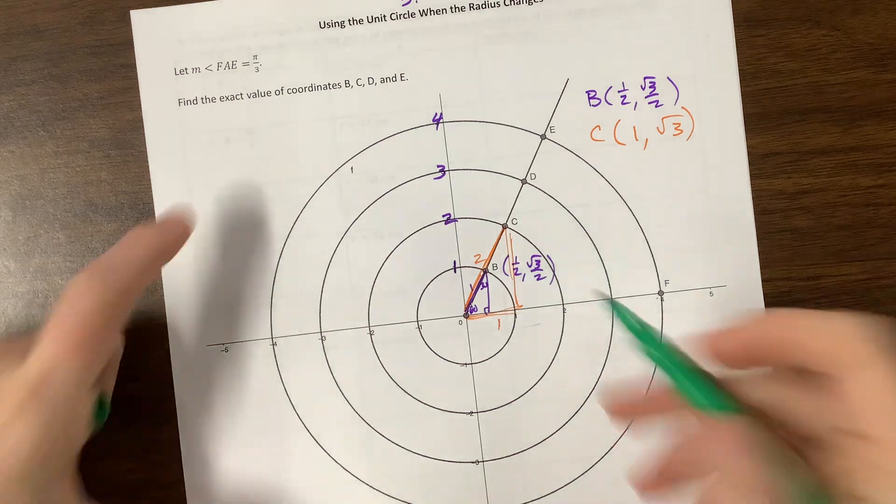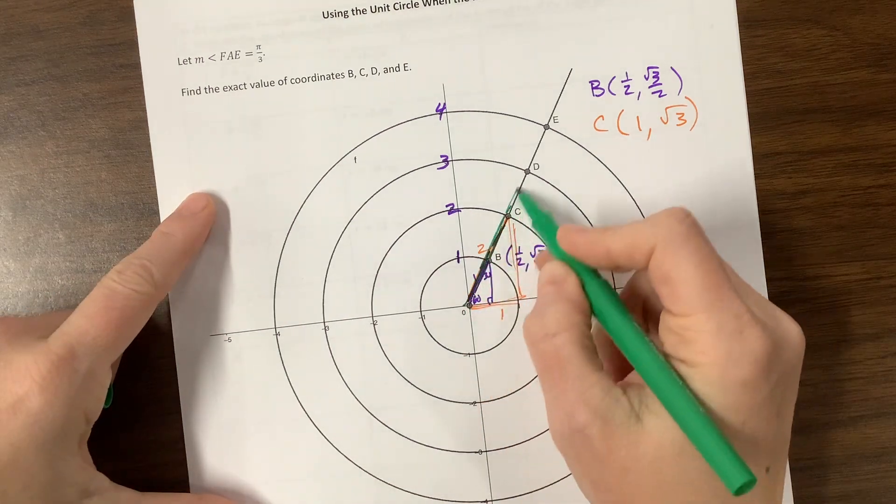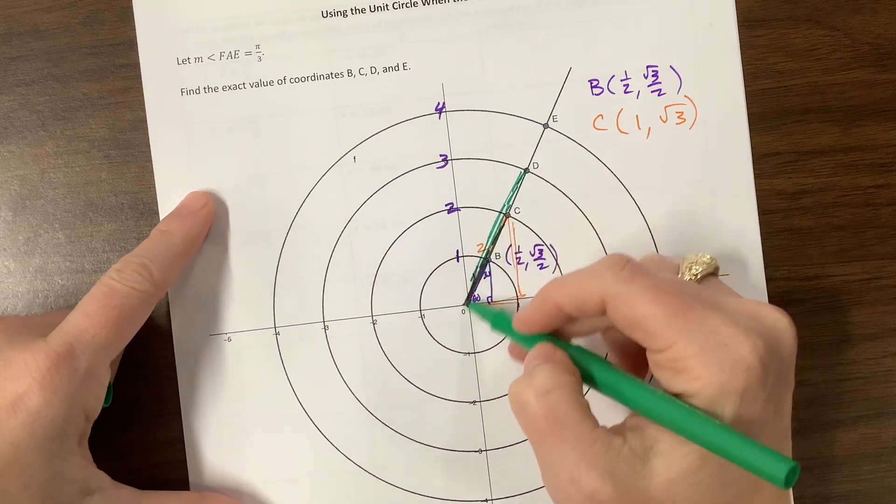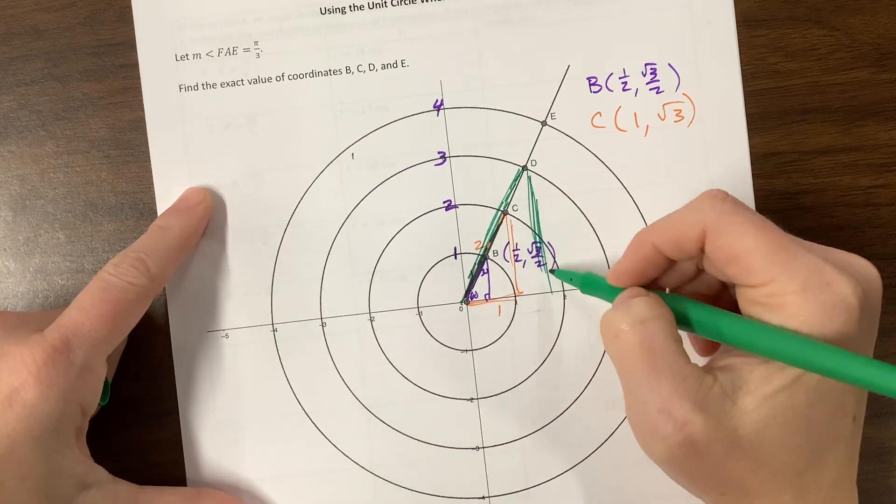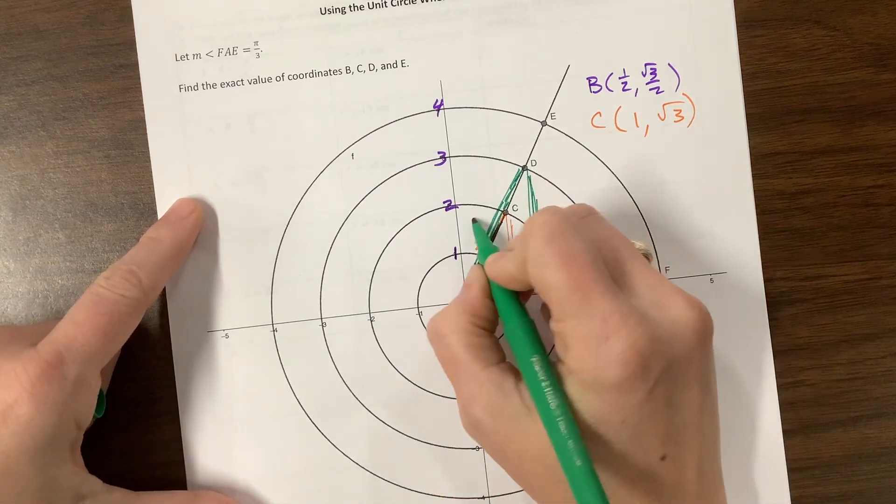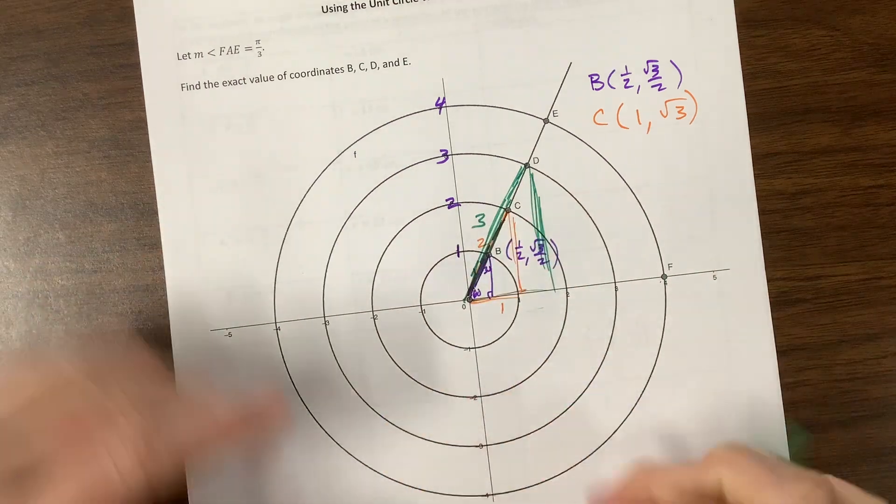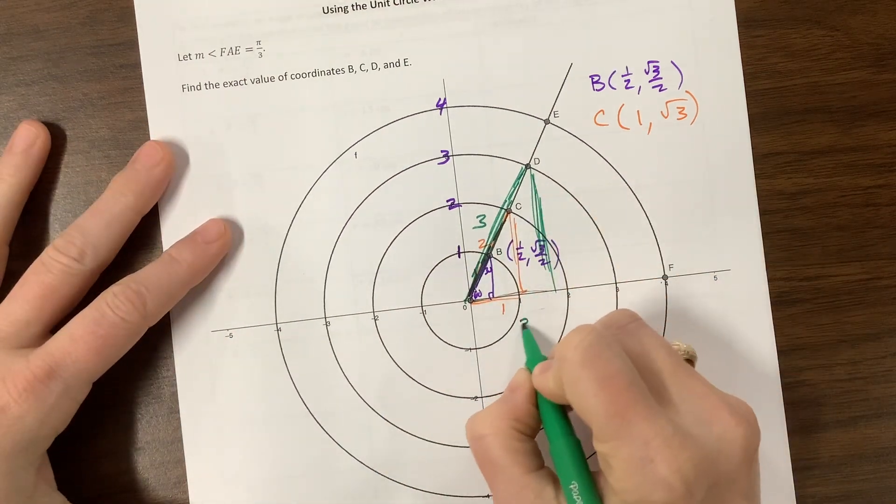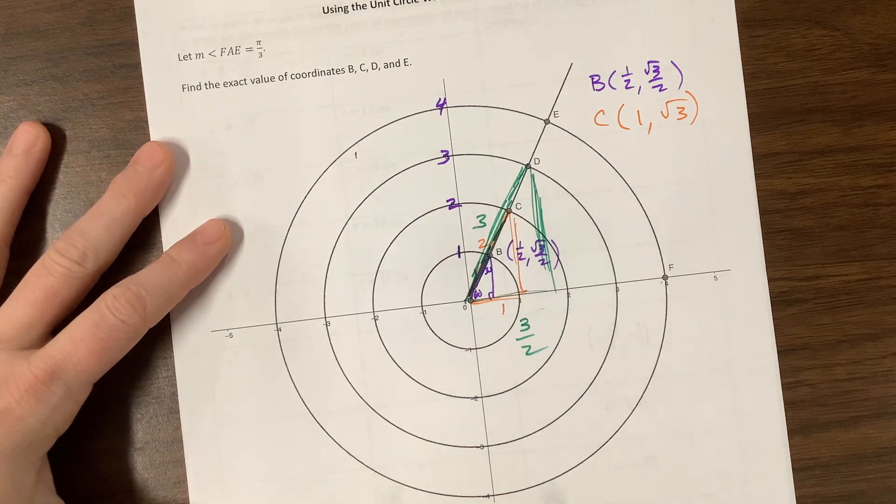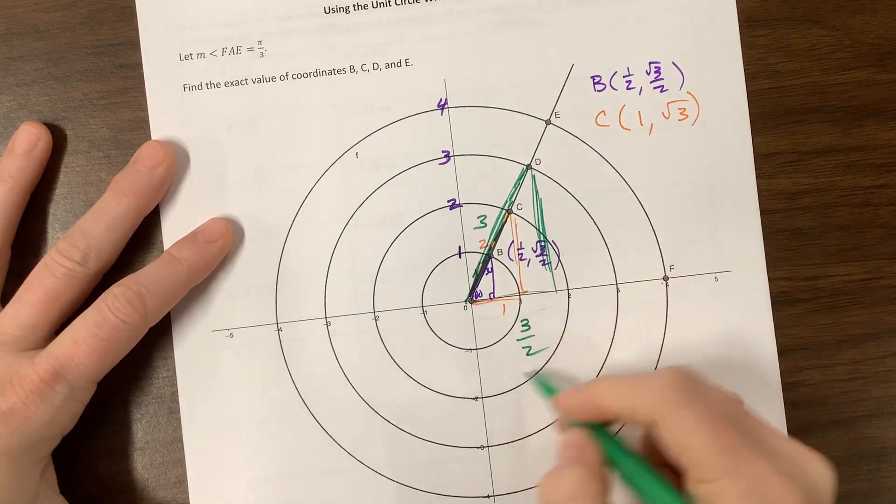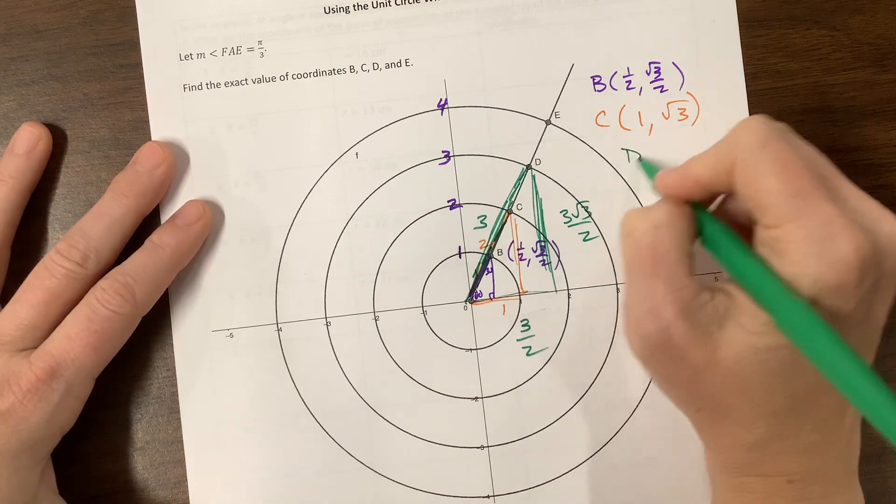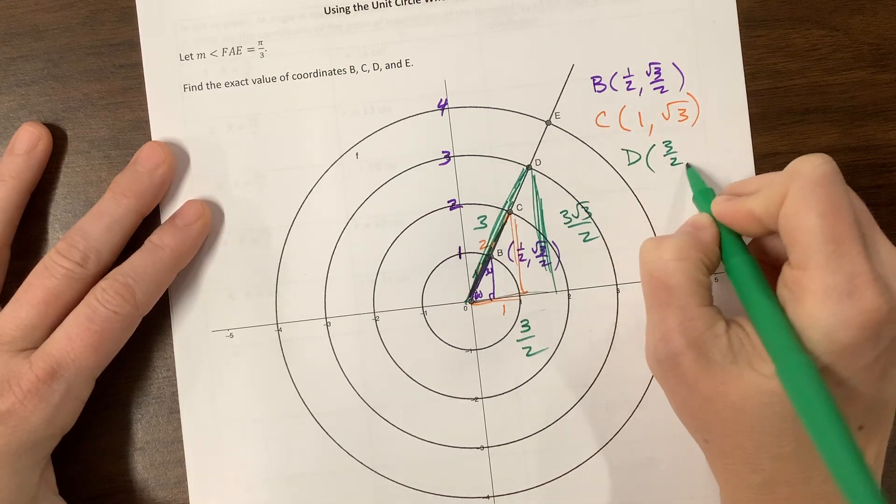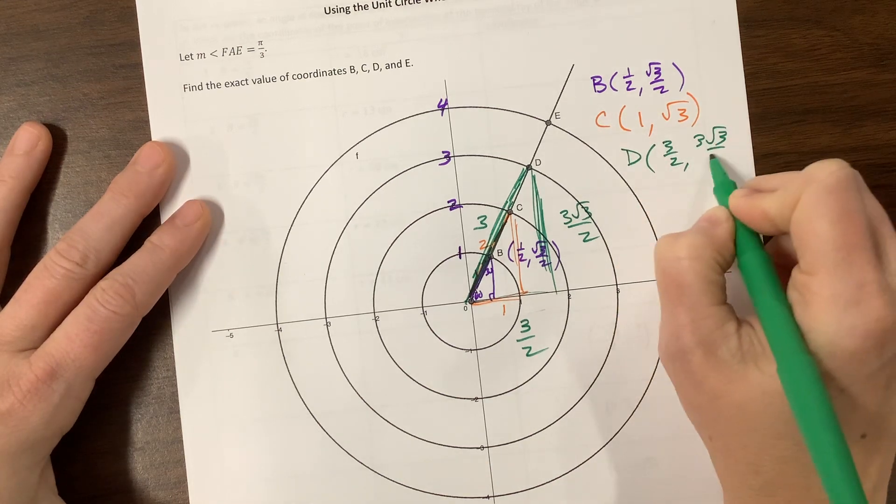Okay, and now we're looking at D. Here we have a hypotenuse of 3, so opposite the 30 is half of that, so in green this is 3 halves, and then this becomes this value times root 3, so 3 root 3 over 2. And so the coordinates of D are 3 halves comma 3 root 3 over 2.